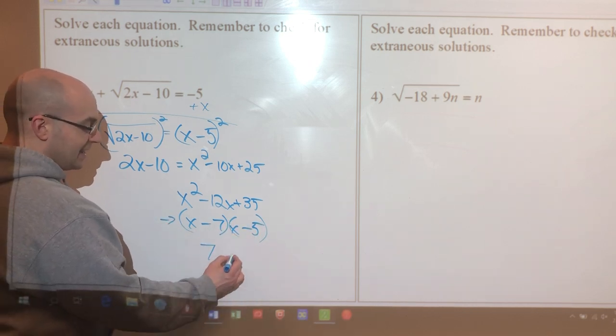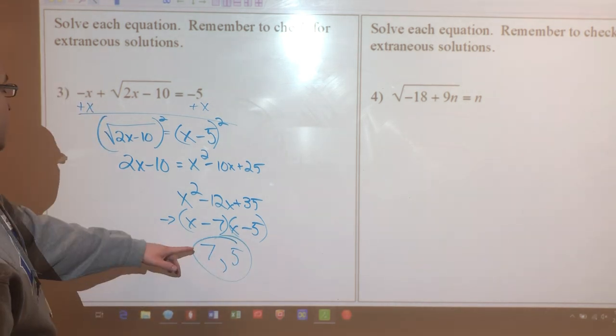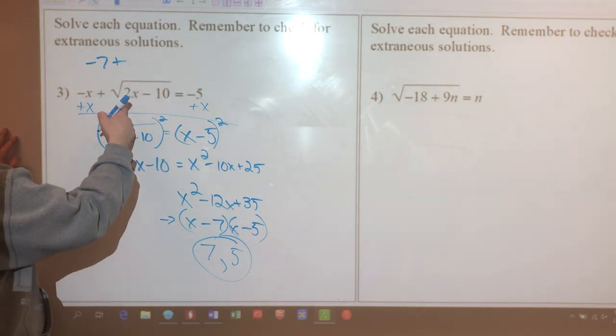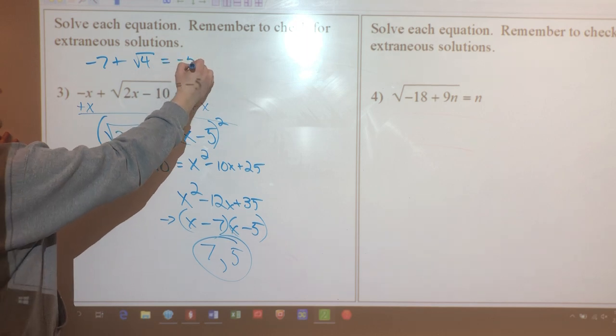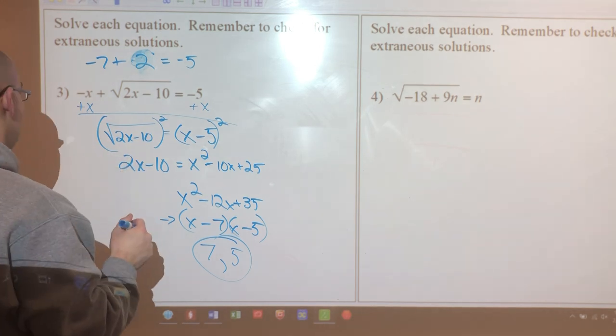When I solve them, they're gonna be 7 and 5. Now let's make sure that these are the solutions I'm looking for. So if I plug in 7 here, I'll have negative 7 plus 14 minus 10 is 4, so the square root of 4, which will be 2, then I'll get negative 5. So if I put a 2 here, is that a true statement? Yes, that is a true statement, so we're good there.